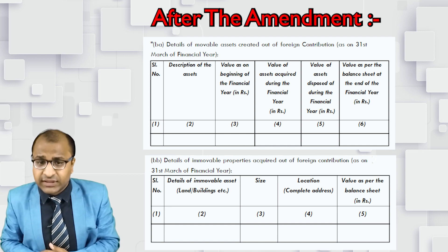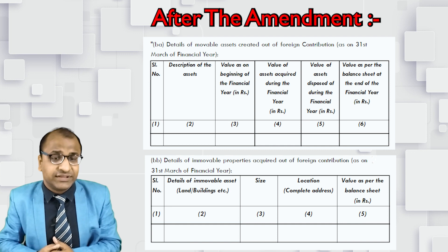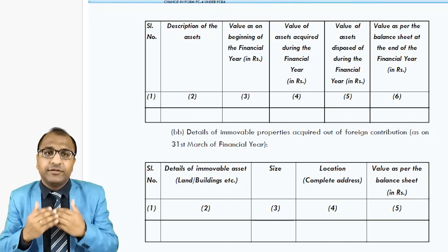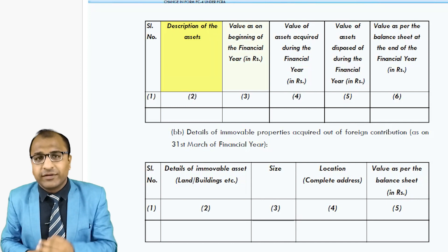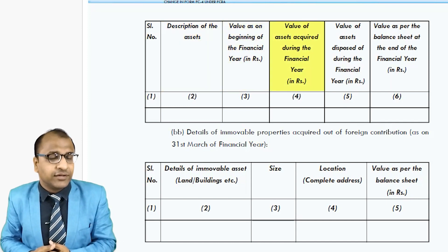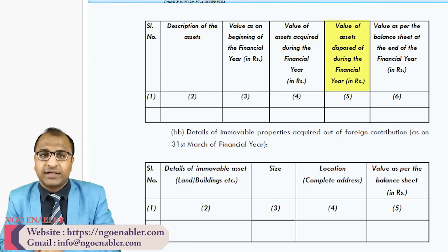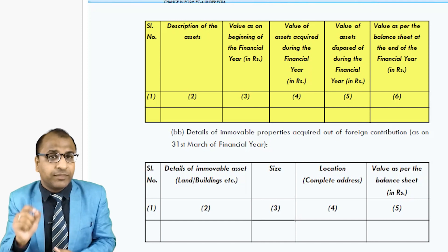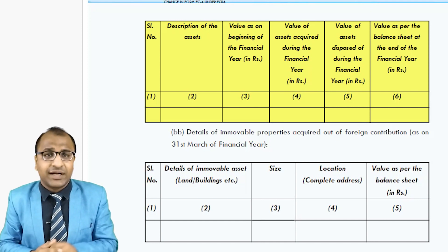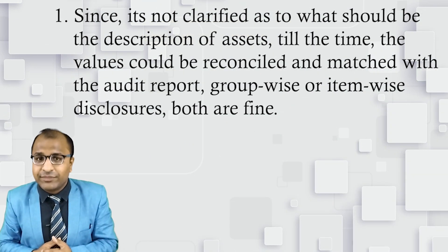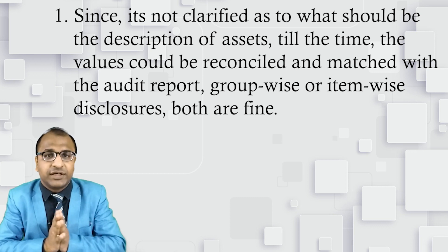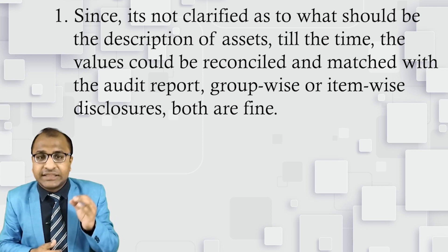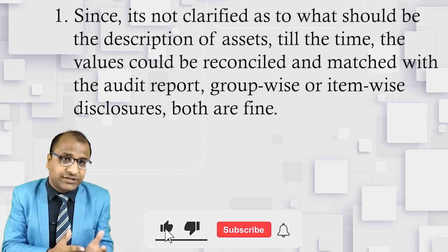Now, what are those details required in these two tables? This will make you feel the need to have an asset register for both movable assets and immovable properties. In the first table: description of the assets, opening value, value of the assets acquired during the financial year, value of the assets disposed of during the year, and the closing value as per the balance sheet has to be filled. These details have been asked only for movable assets. For this table, there are two catches. First, most organizations might be maintaining assets as a group — like furniture and fixtures, equipment — and not item-wise like chairs, tables, generator, computer.